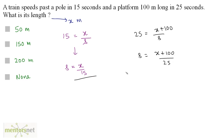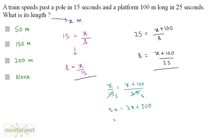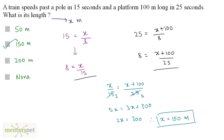We can equate the two right-hand side terms: X by 15 equals X plus 100 by 25. Cross-multiplying, we get 25X equals 15X plus 1500, so 5X equals 3X plus 300, giving 2X equals 300, and therefore X equals 150 meters. So the answer is option B: 150 meters, which is the length of this train.